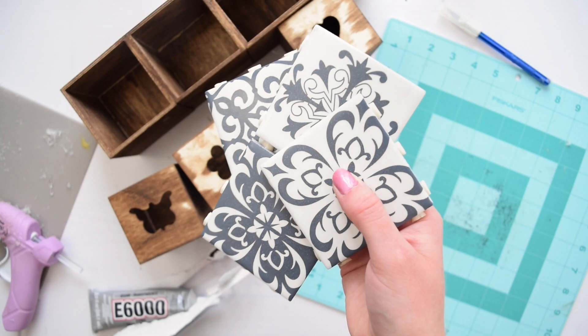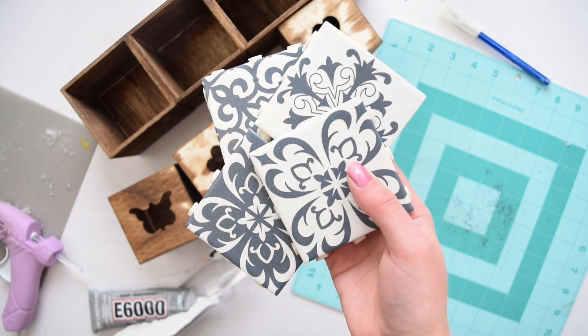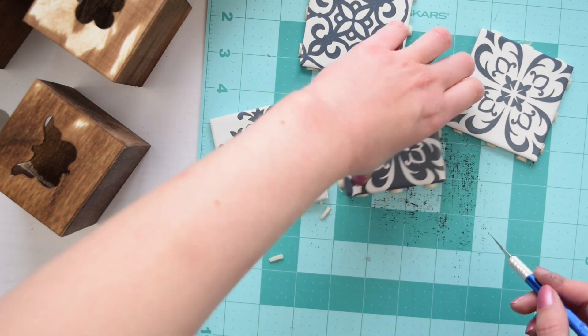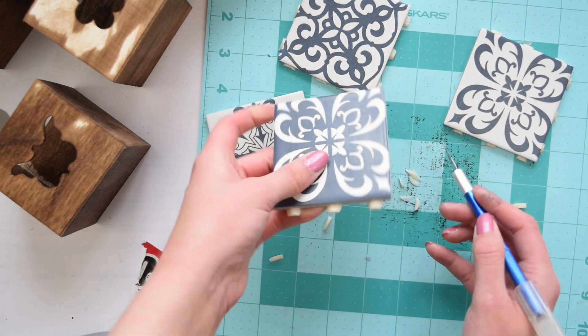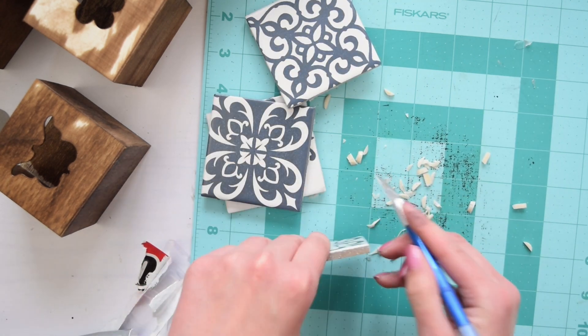Now that that stain is dry, I'm using these leftover tiles from a really cool tiled tray that I did last year. And the first step is to remove all these little silicone pieces that hold the tiles together in the tile sheet because you want these to be nice and seamless for this project.